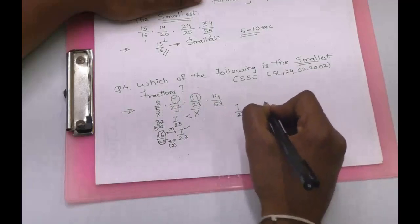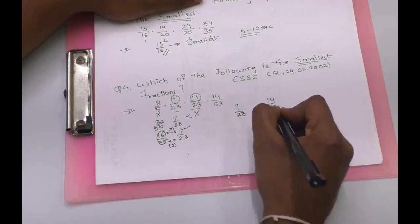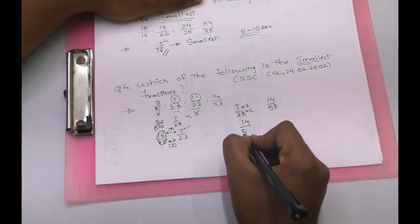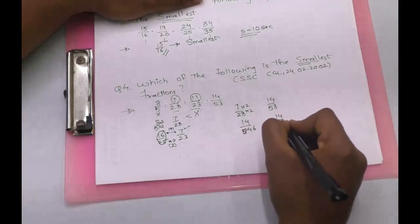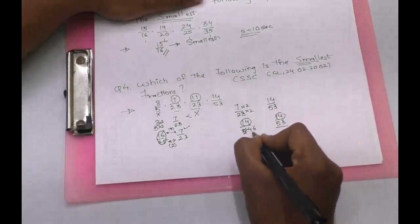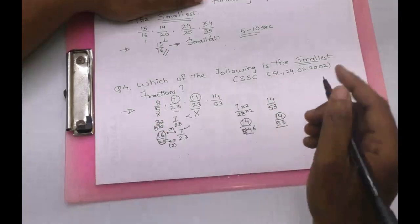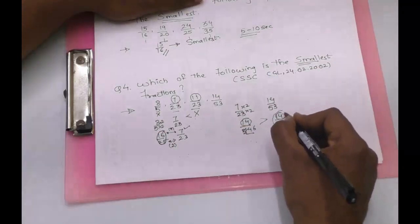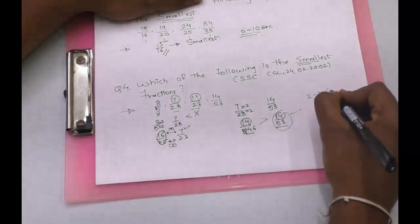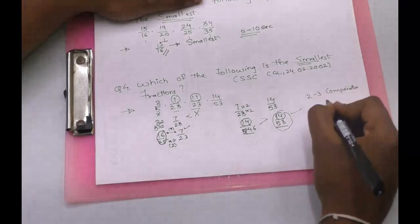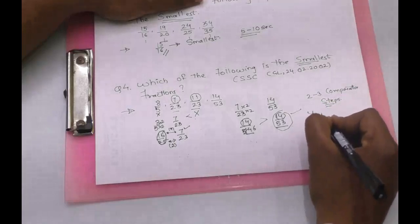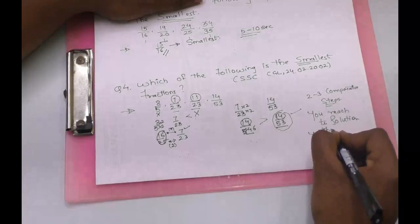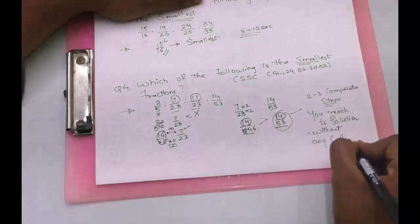Now we compare 7 by 23 and 14 by 53. Applying the same logic — multiply numerator and denominator by 2 — we get 14 by 46. Comparing 14 by 46 and 14 by 53: the numerator is the same, but the denominator of 14 by 53 is bigger. When the denominator is bigger, the solution will be smaller. So 14 by 53 is our answer. In 2 to 3 comparative steps, you can reach the solution without any calculation.